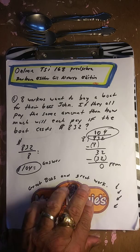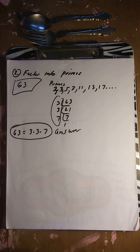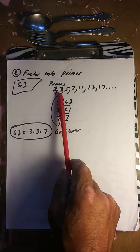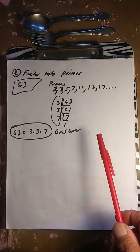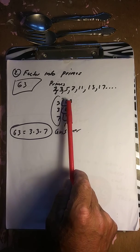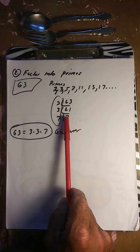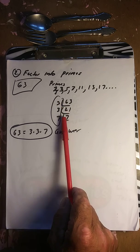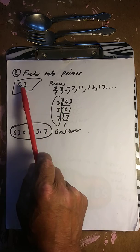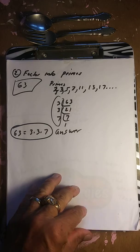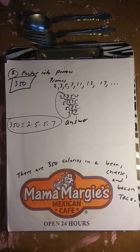Next one: factor into primes. The number is 63. Prime numbers are 2, 3, 5, 7, 11, 13, 17. Divide 63 by 3 to get 21, divide 21 by 3 to get 7, and 7 divided by 7 is 1. So 63 is 3 times 3 times 7.